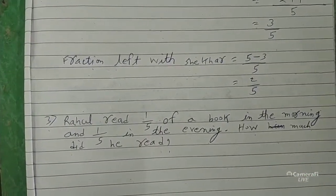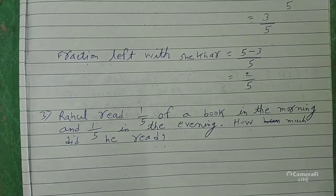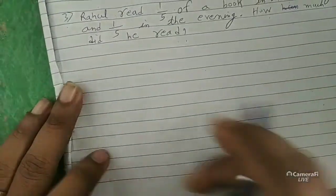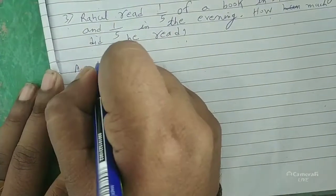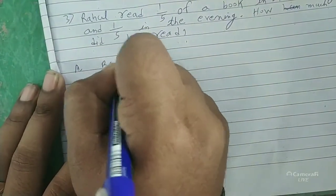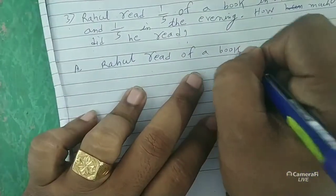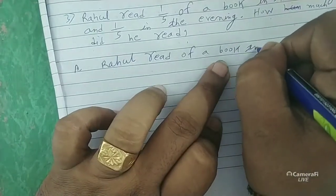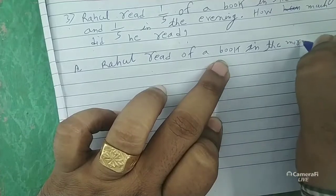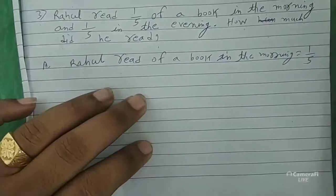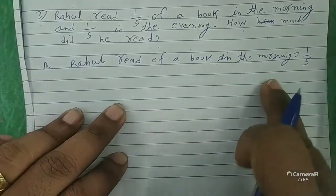Question number 3: Rahul read 1 by 5 of a book in the morning and 1 by 6 in the evening. How much did he read in total? Answer: Rahul read of a book in the morning is equal to 1 by 5.